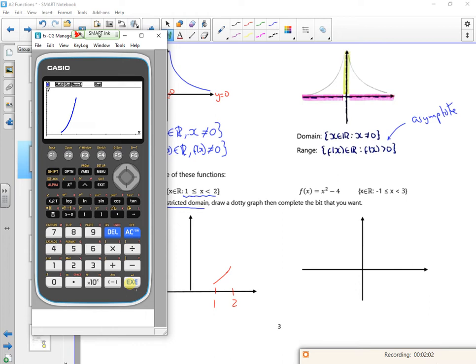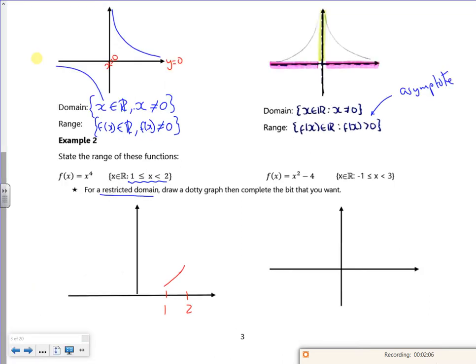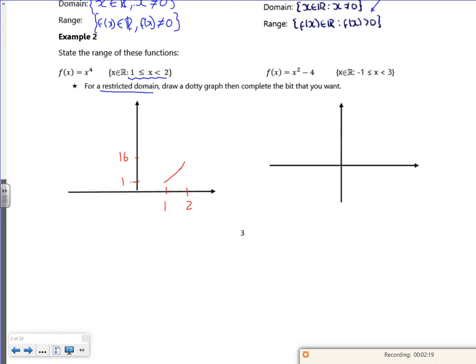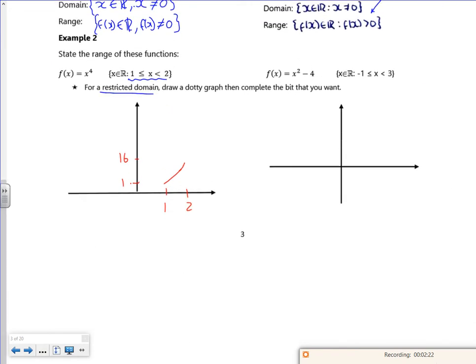Now, I need to make sure that I check my y values that go with that. So if I put 1 in to x^4, I get 1 out. If I put 2 in, I get 16 out. 2, 4, 8, 16. So my range. So it says draw the dotty bit. I don't need to draw the whole thing and then just draw the bit you want. You don't need to do that. That's fine. Because your calculator will do that. So my range would be the f(x), so that's the real numbers, and I'm going between 1 and 16 there.